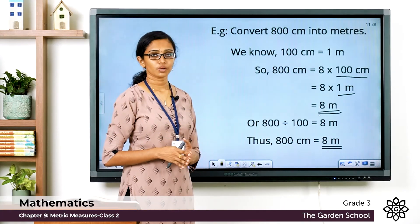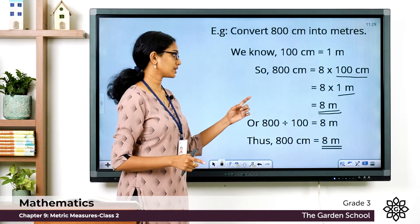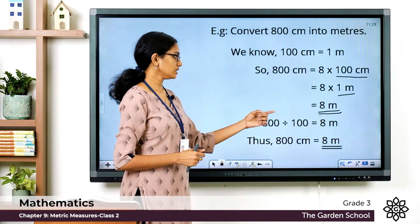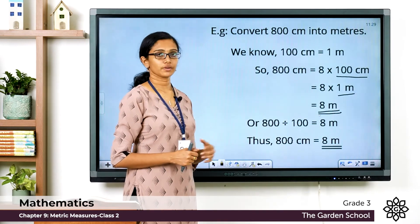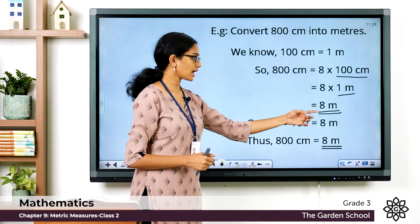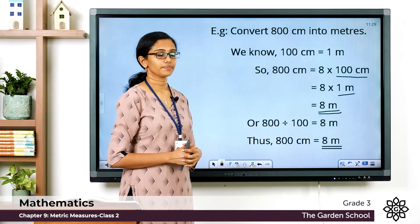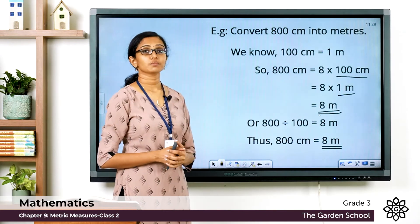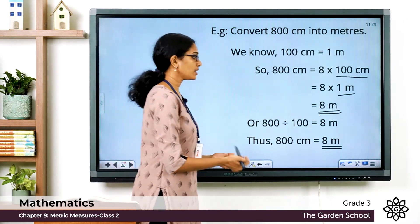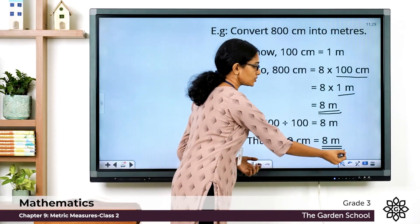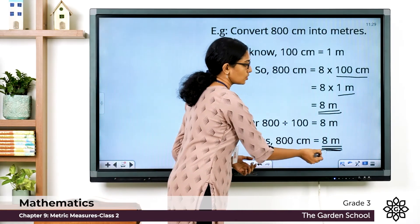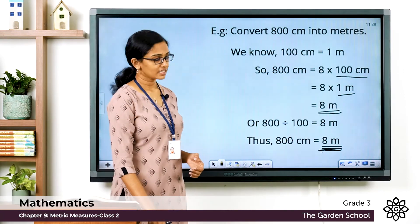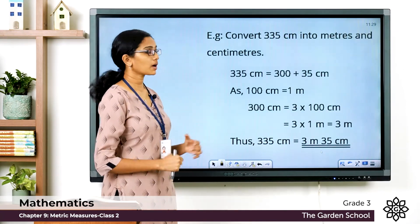Using the second method: 800 ÷ 100 = 8 meters. So 800 centimeters = 8 meters.